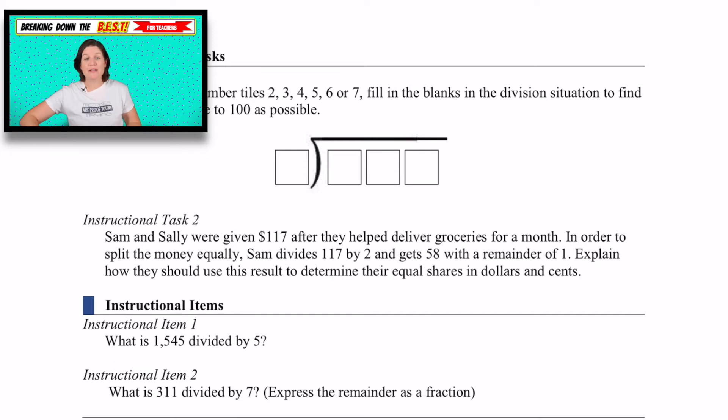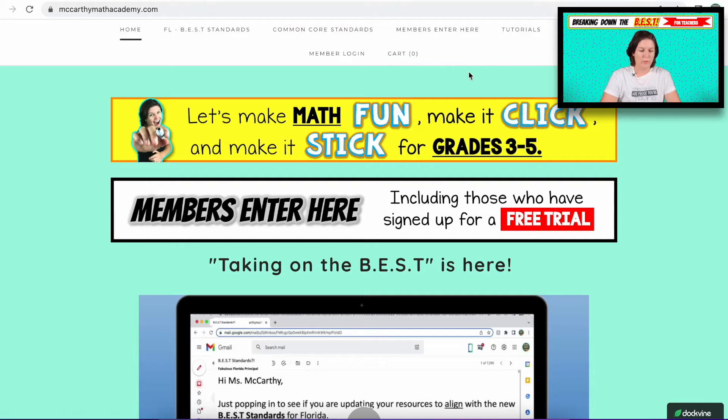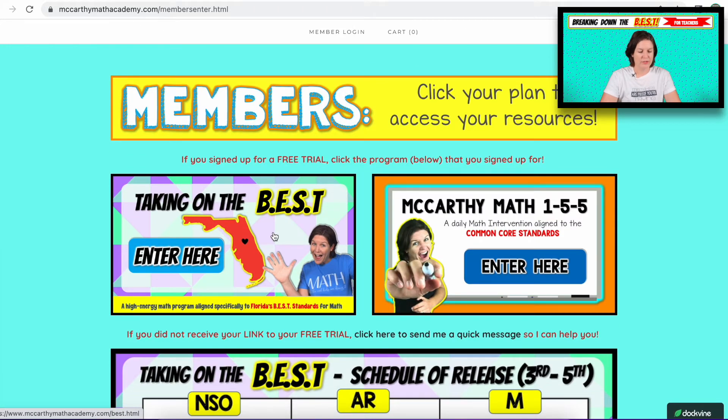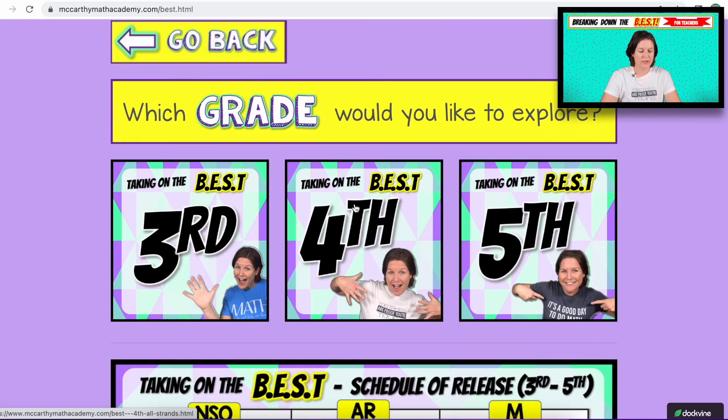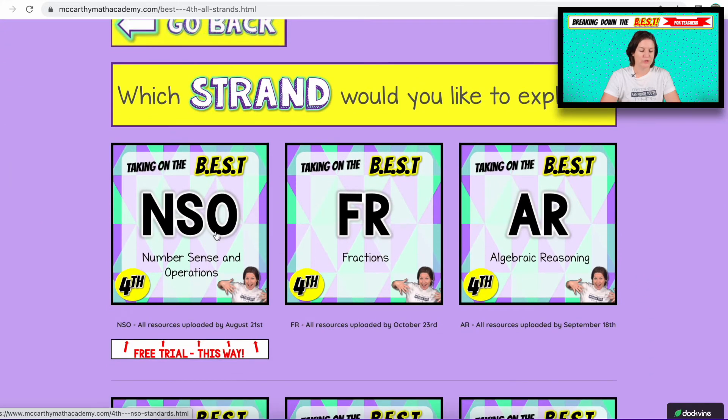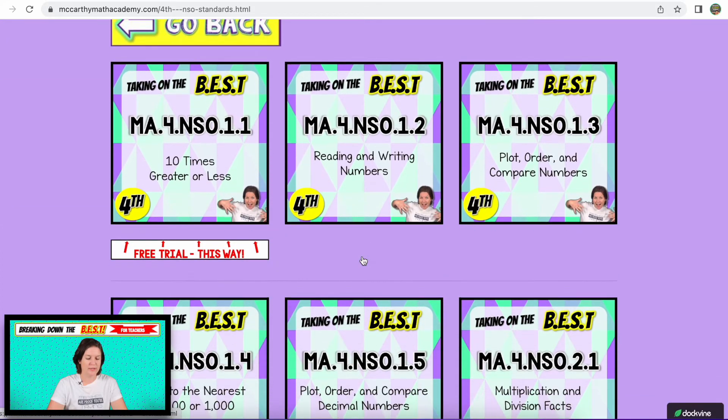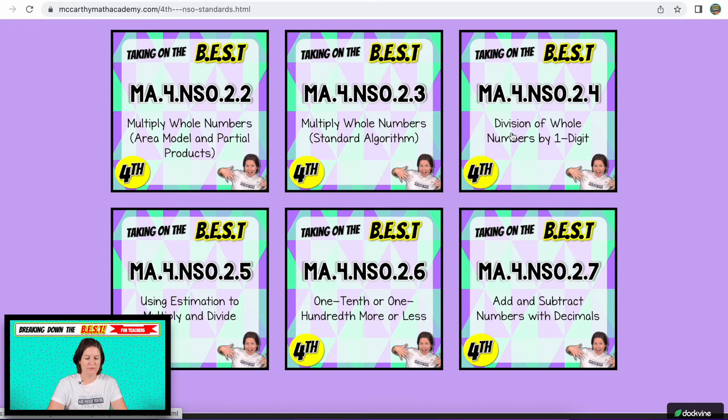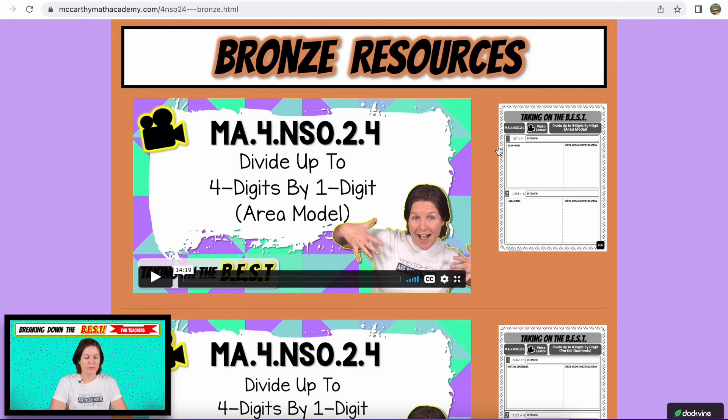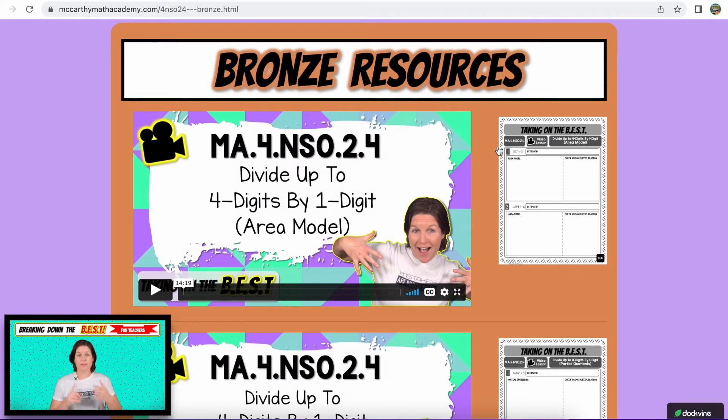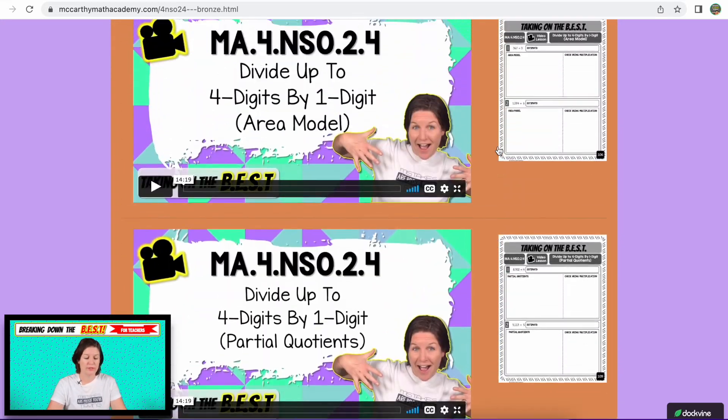Here we are at the website. You can go to members enter here. Then we are Taking on the Best, which grade, fourth grade, which strand, we're going to go to the NSO strand. And scrolling down to this division, MA.4.NSO.2.4 division of a whole number by one digit. So multi digit whole numbers by one digit. For your bronze resources, if you have a bronze membership, a silver membership, or a gold membership, you do have access to these video lessons. And there's three video lessons for this standard.